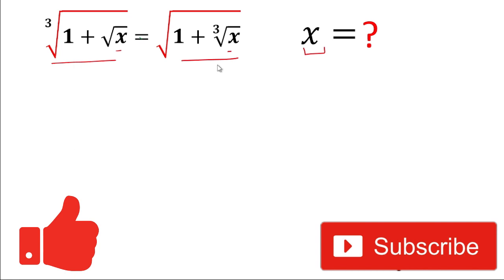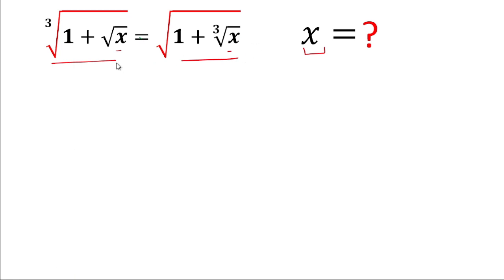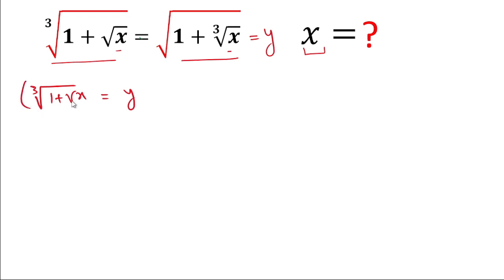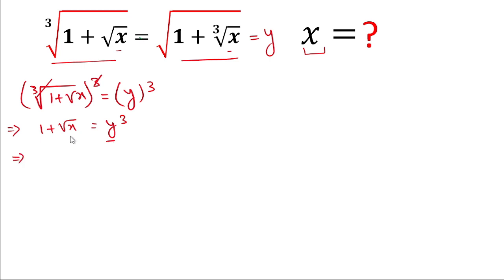For the solution of both expressions, we'll let each expression equal to y. For the first equation, we write: 3 times the cube root of (1 plus square root of x) equals y. To solve this, we cube both sides — left-hand side and right-hand side — so the cube and cube-root cancel, giving us: 1 plus square root of x equals y cubed.